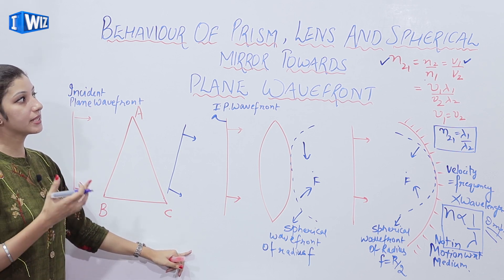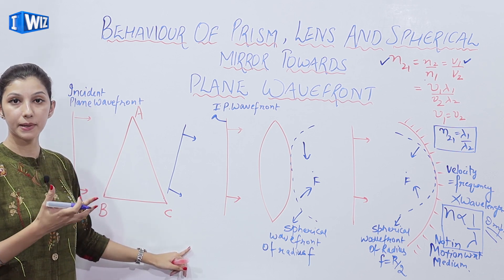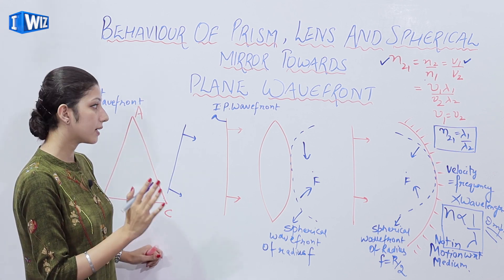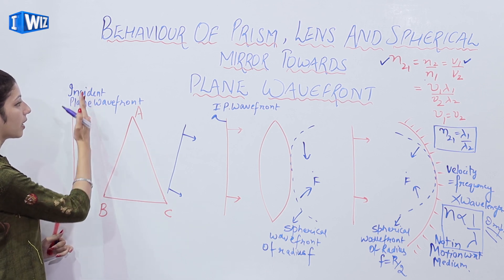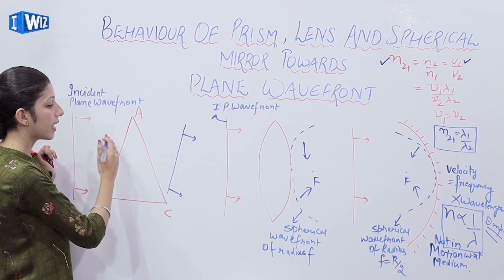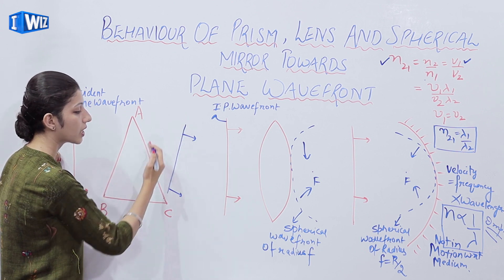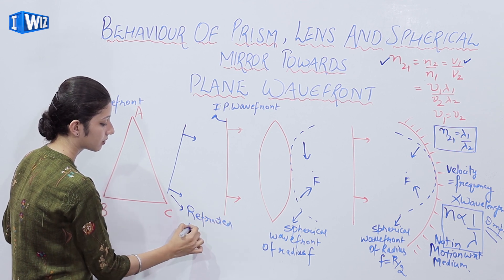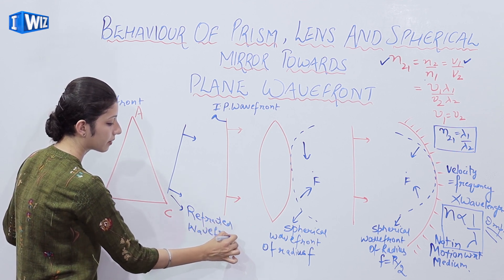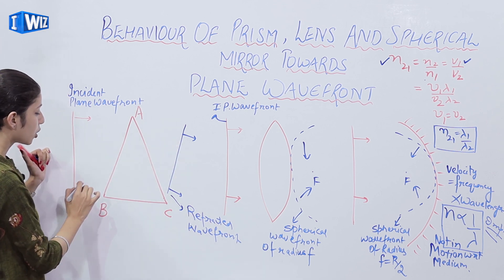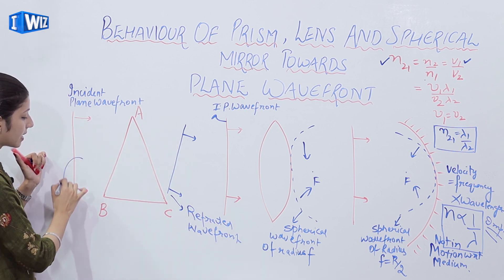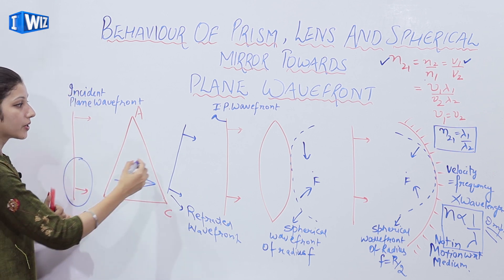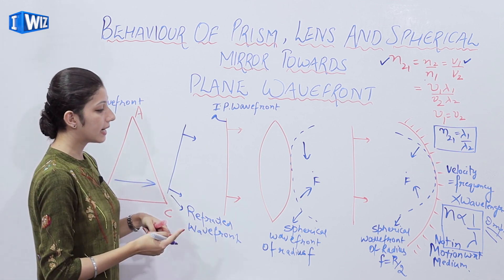Let us briefly discuss the behavior of a prism, lens, and spherical mirror towards a plane wavefront. For a prism with principal section ABC, when an incident plane wavefront hits it, the refracted wavefront that emerges is tilted. This tilt occurs because the lower portion of the wavefront has to travel through greater thickness of glass compared to the upper part.